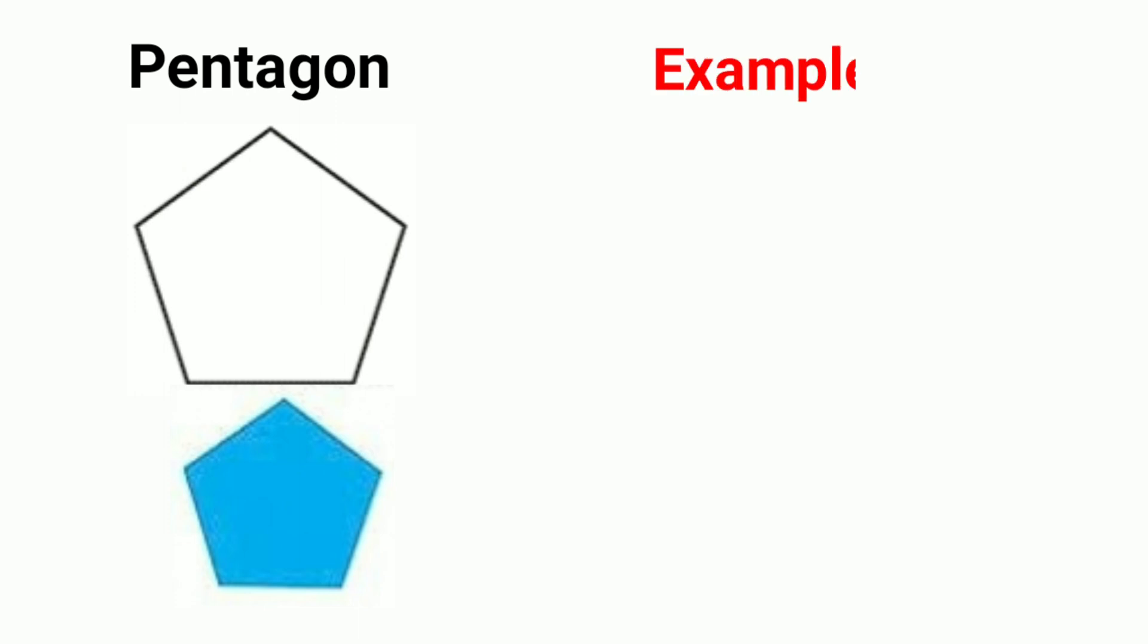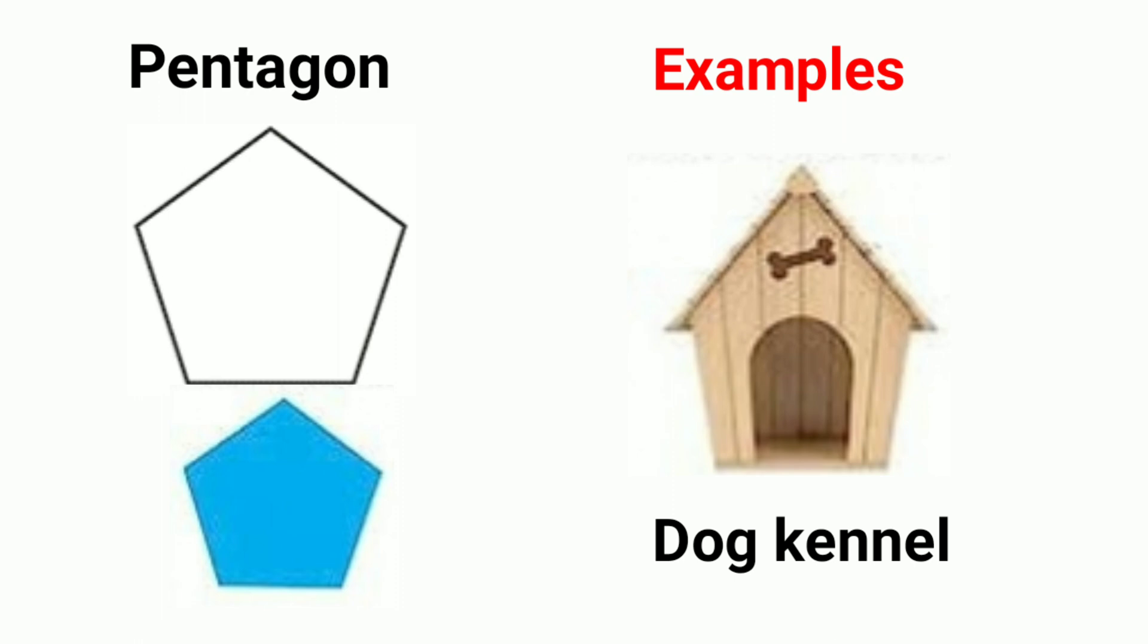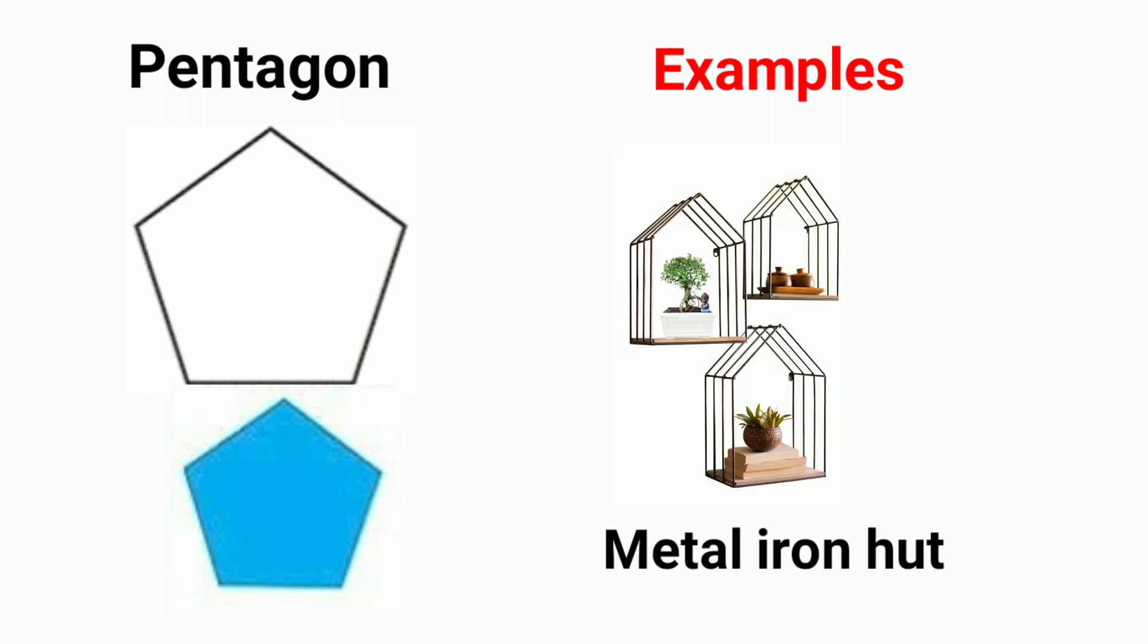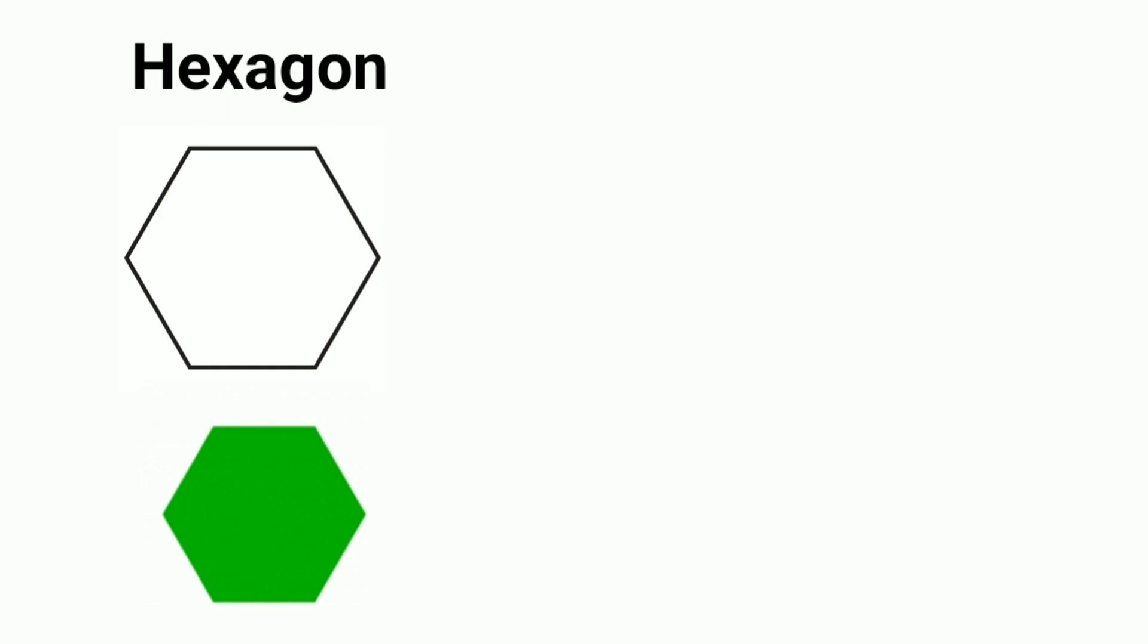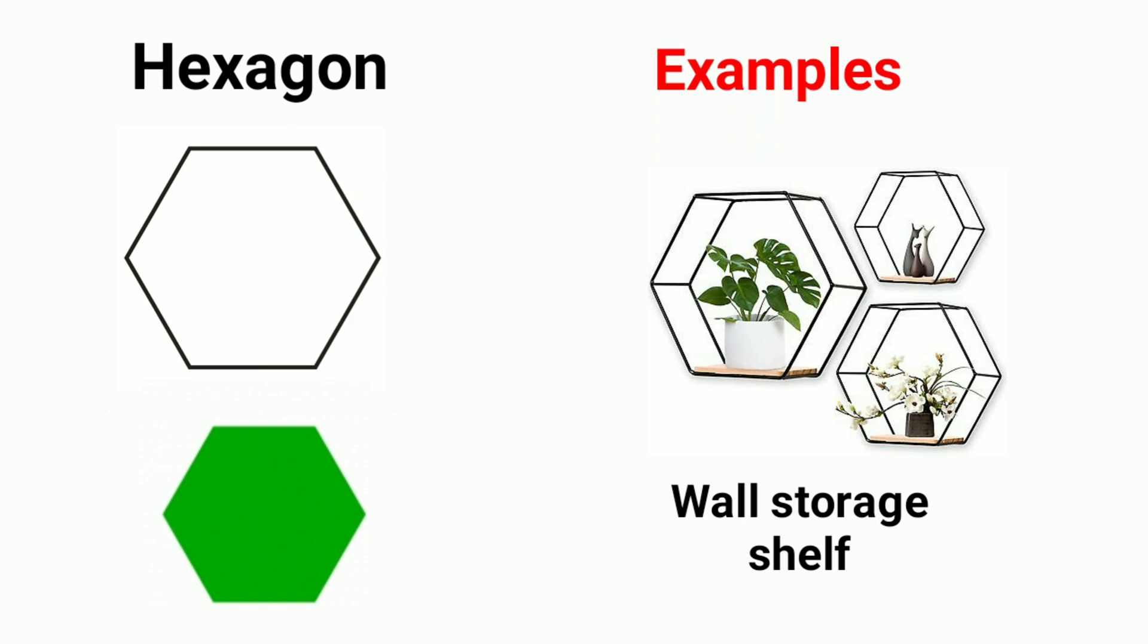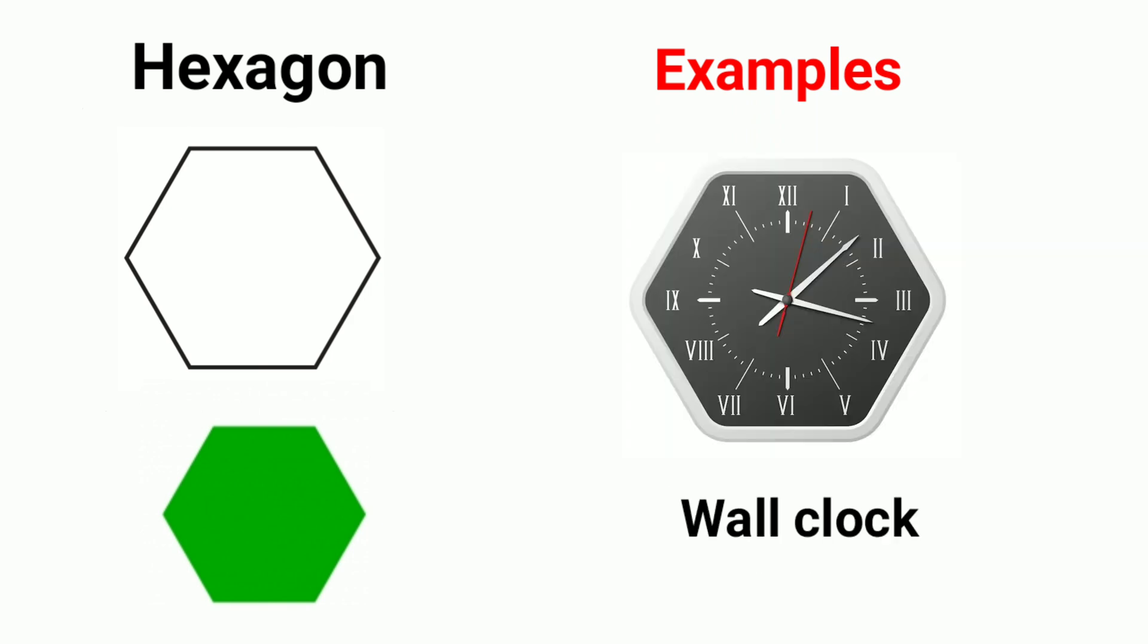Examples of pentagon shapes: dog kennel, metal iron hut house. Hexagon. Examples of hexagon shapes: wall storage shelf, wall clock.